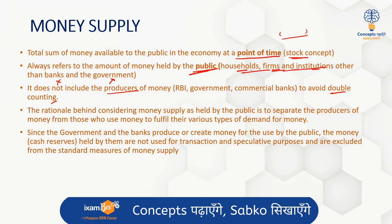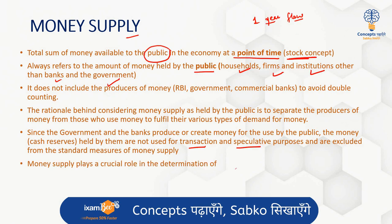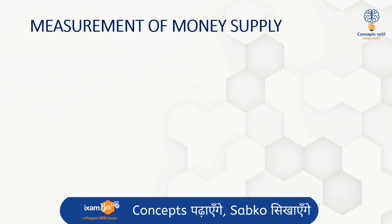Since the government and banks produce or create money for use by the public, the money held by them is not actually used for transaction or speculative purposes. That's why they are excluded from standard measures. The rationale is to separate the producers of money from those who actually use money to fulfill their various needs, like the transactionary motive or speculative purposes. Money supply plays an important role in determining the price level — that is, inflation — and also the interest rates on deposits and loans.